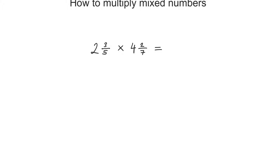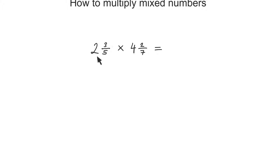Here we have two mixed numbers being multiplied: 2 and 3 fifths multiplied by 4 and 2 sevenths. In order to multiply mixed numbers, all we need to do is convert each of the mixed numbers into an improper fraction.